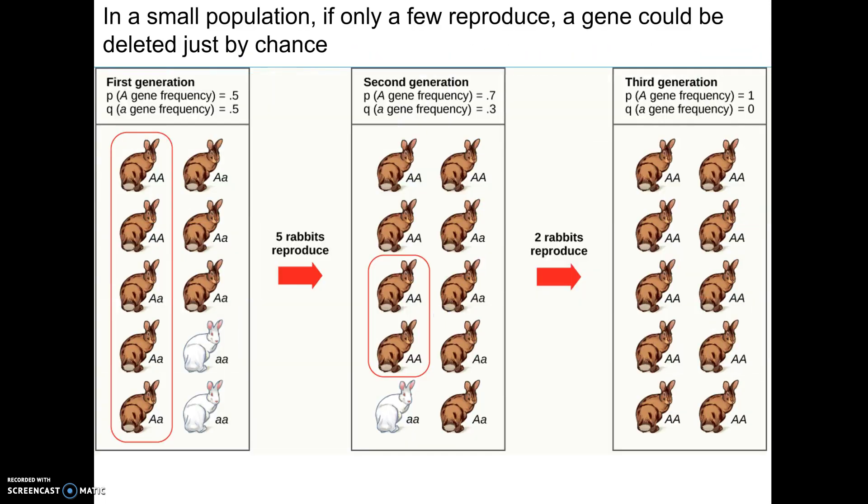Here's a picture showing rabbits. This is a small population of only ten rabbits, and the frequencies of P and Q are both 0.5 when we start. A random five rabbits produce offspring, which shifts the gene frequencies — in Generation 2 there are only ten rabbits, and P has gone up to 0.7 while Q has dropped to 0.3. And then if only two of those rabbits survive, you might end up with a population where all ten rabbits are big A big A — homozygous for the trait.